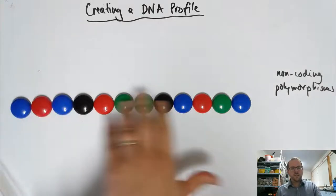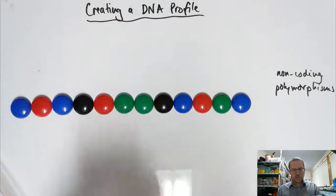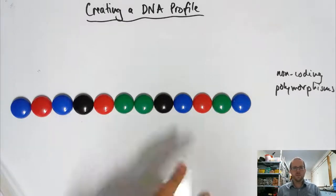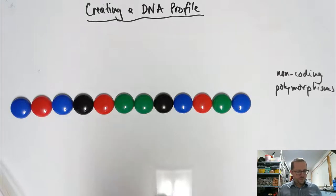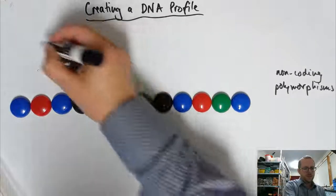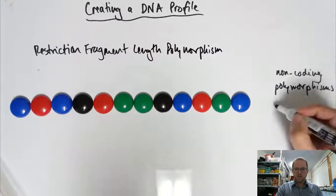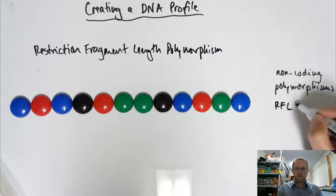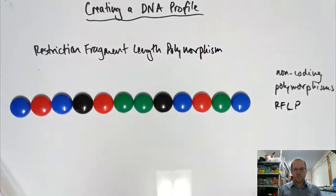I'm going to use these colored buttons here to model how the different techniques have worked in the past. So the first technique, which was pioneered in the mid-80s by Sir Alec Jeffries, who was the first person to use DNA profiling in a forensic context, was called Restriction Fragment Length Polymorphism, also known as RFLP. Forensic scientists love their acronyms as much as teachers do.